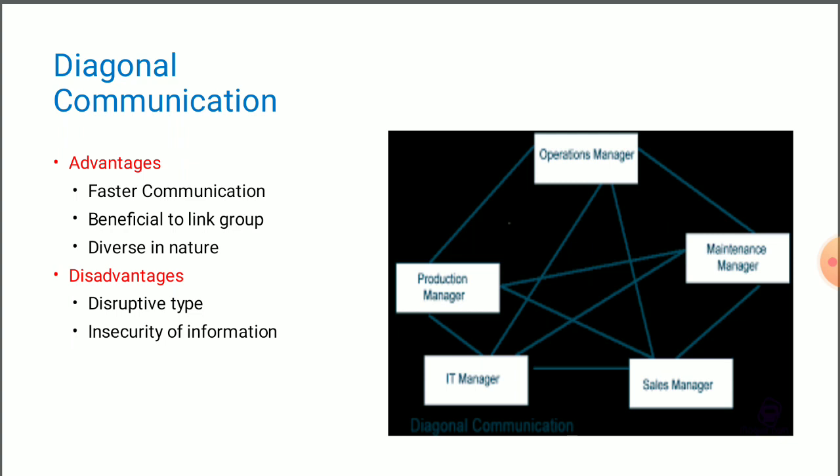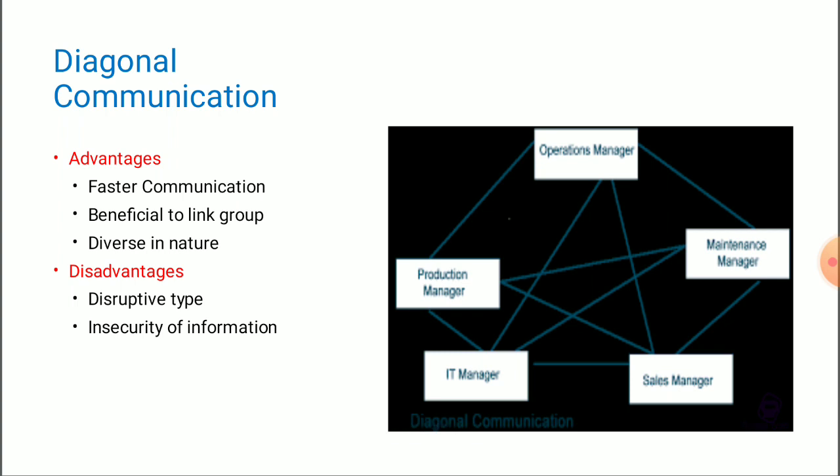So in this video, what we have seen — let me repeat. We have seen the concept of diagonal communication. Diagonal communication is a cross-functional way of doing communication in business organizations. Cross-functional means there are no restrictions — any authority can talk with any other authority. As far as advantages are concerned, there are three: faster communication, beneficial to link group, and diverse in nature. There are two disadvantages: disruptive type and insecurity of information.